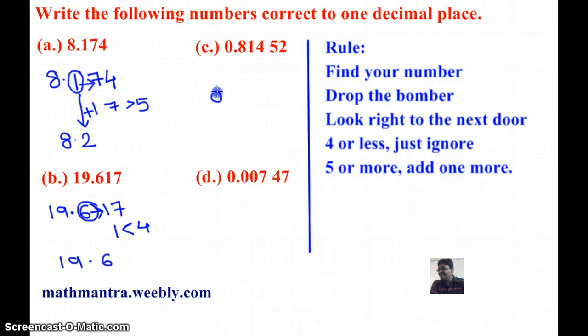Next, 0.81452. So my number is 8 and the next door number is 1, which is less than 4. So just ignore, which means 0.8 is my answer.